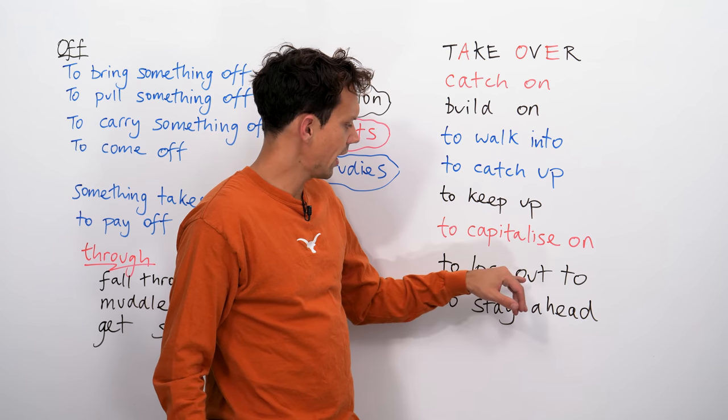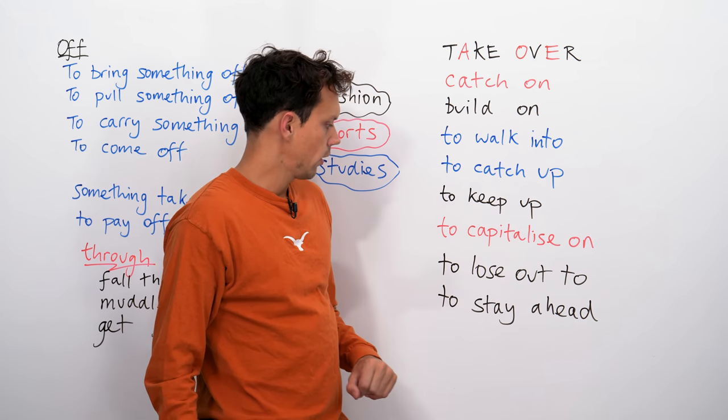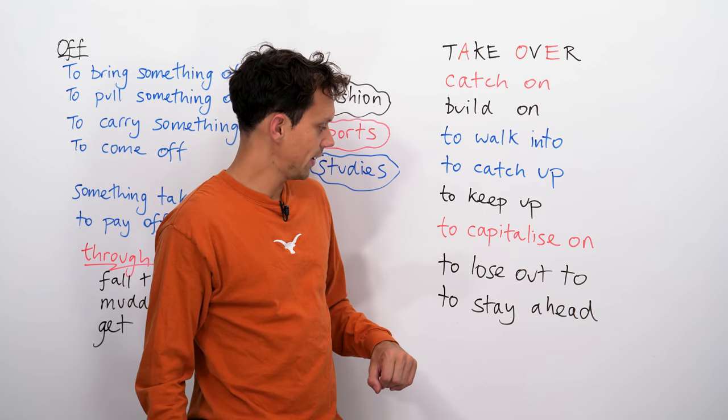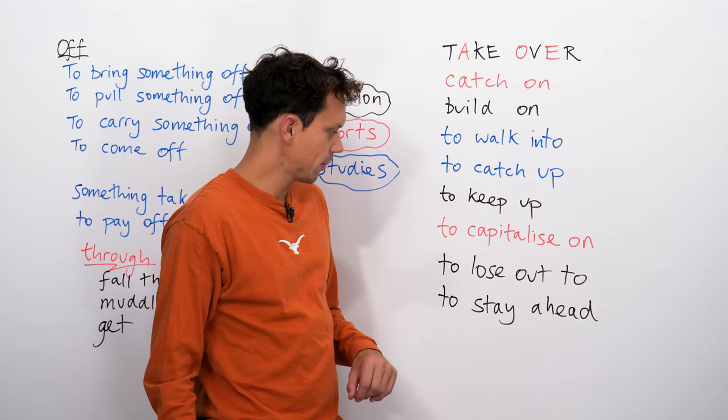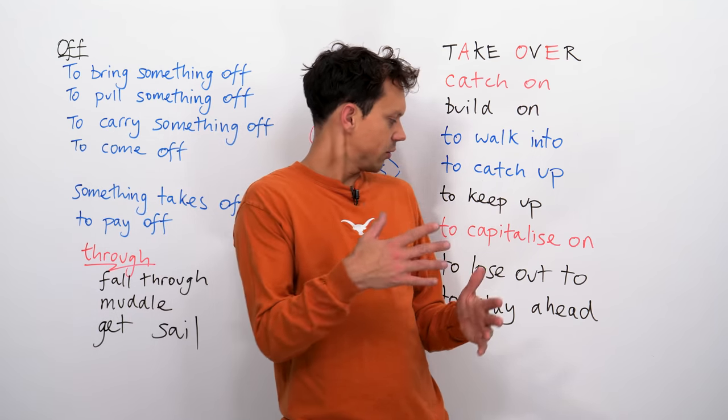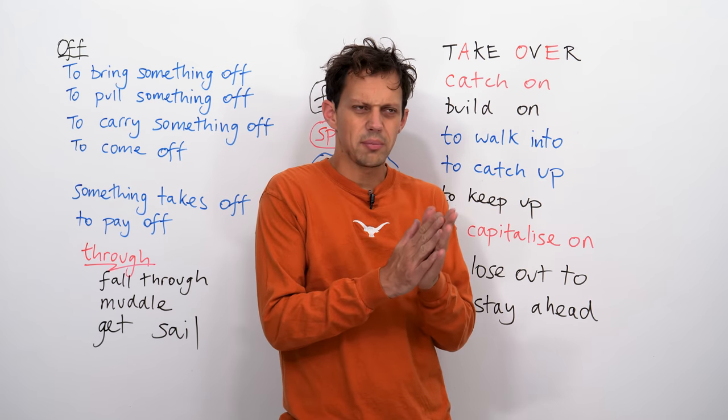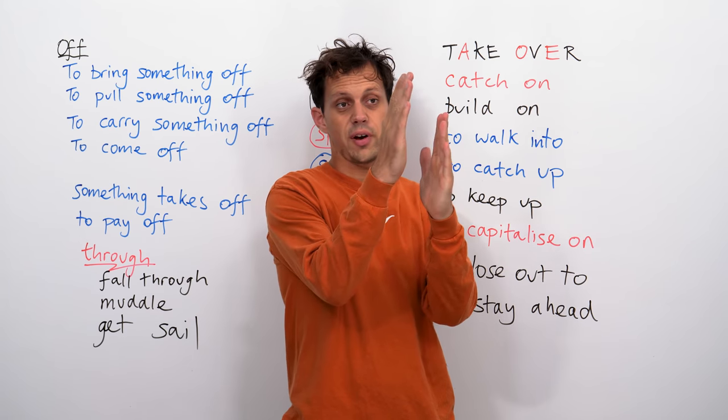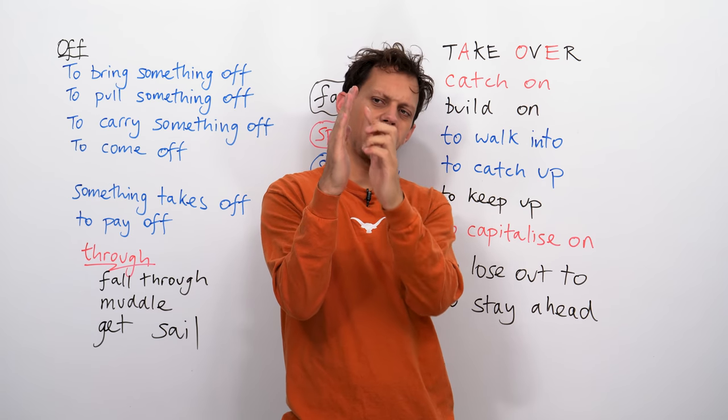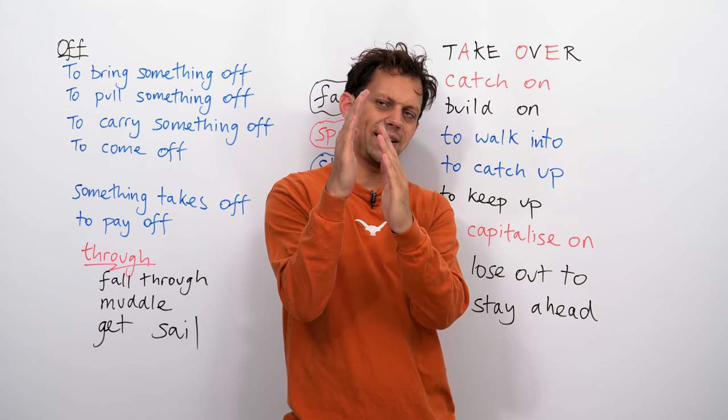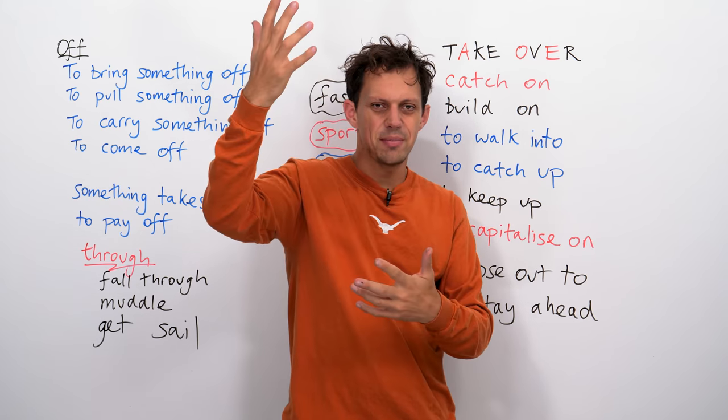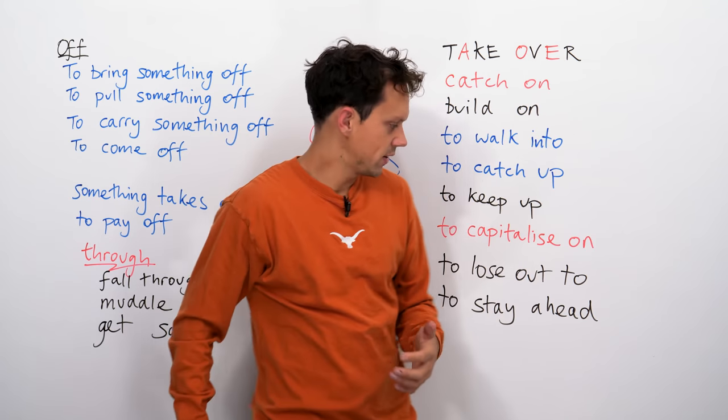To lose out to. New Zealand lost out to England in the Rugby World Cup semi-final. So, they lost out to. It means both teams were trying to get to the final, but New Zealand weren't quite at that same standard as England. So, they didn't get the same kind of prize that England did.